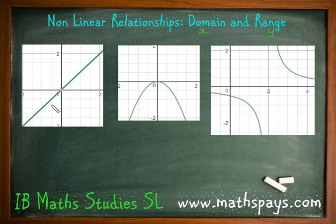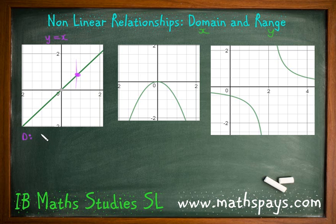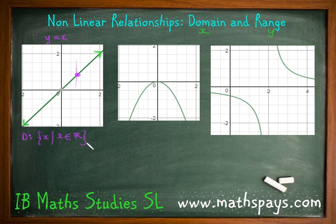Now let's have a look at the graph of Y equals X. Again, it's a linear function — we know it's a function from the straight line test, one X coordinate only. For my domain I put my parentheses: the set of X. Once again it is a linear function and they continue on forever, which means X is an element of all real numbers. For my range, Y is an element of all real numbers.